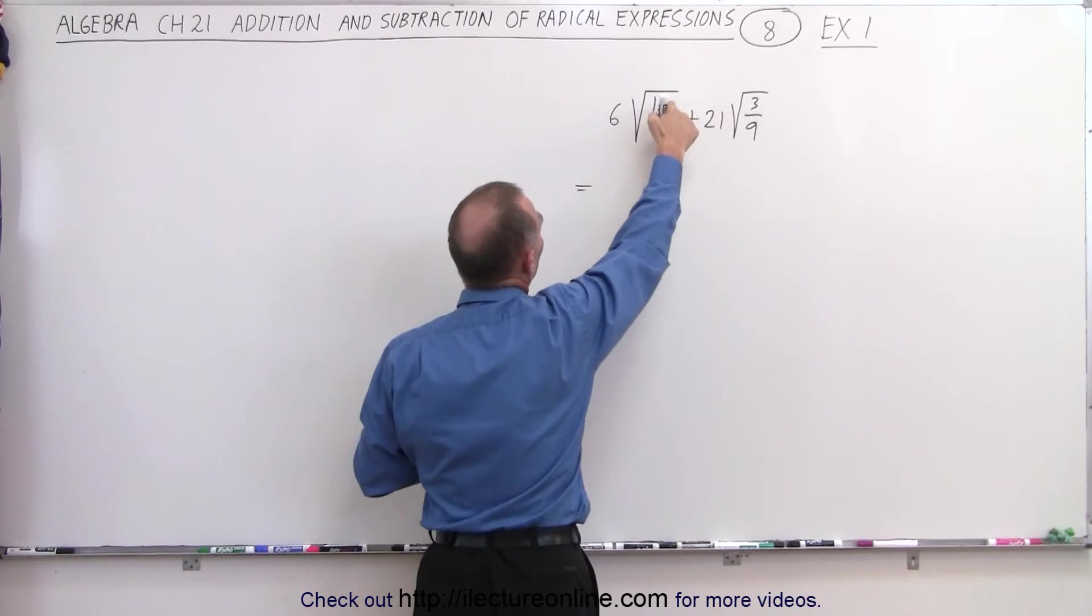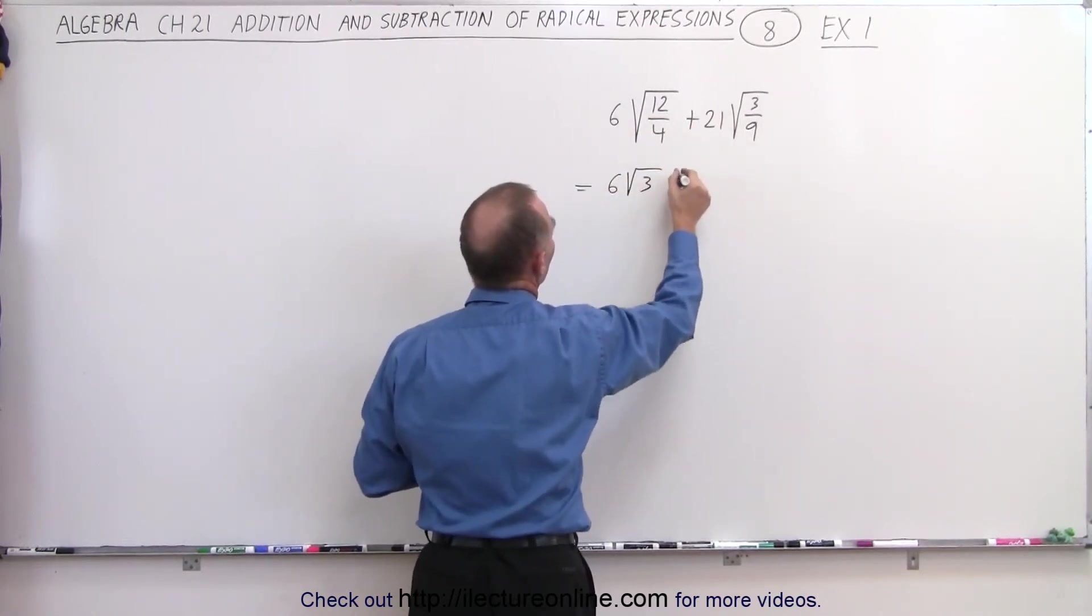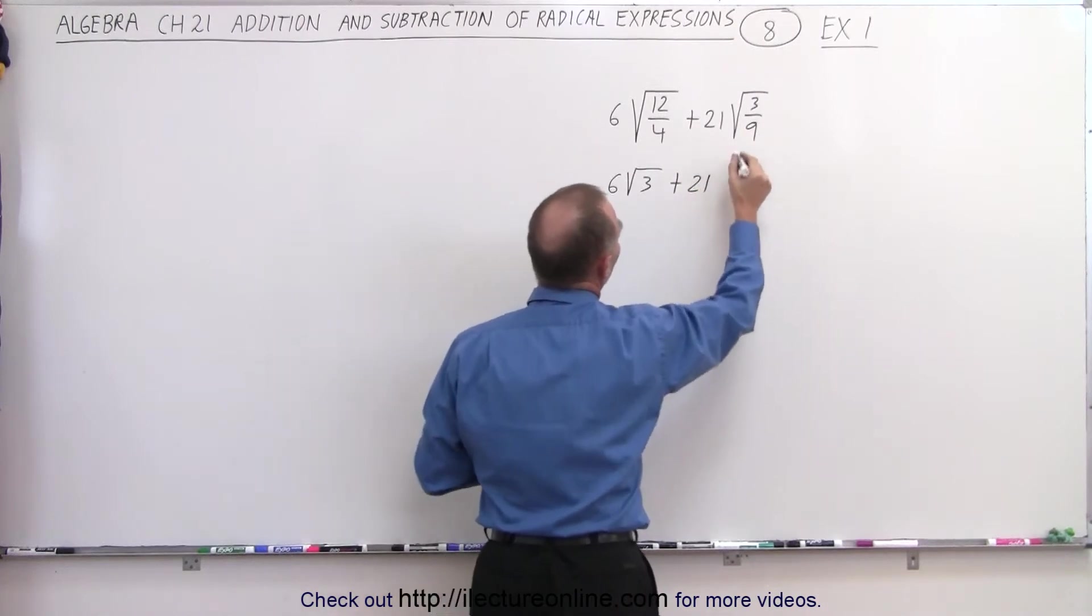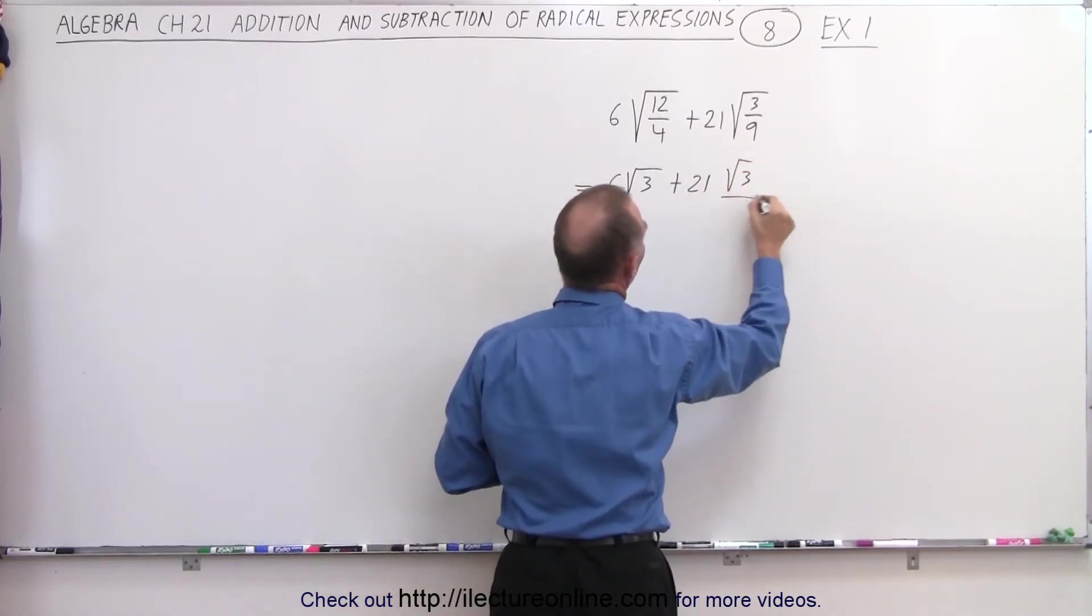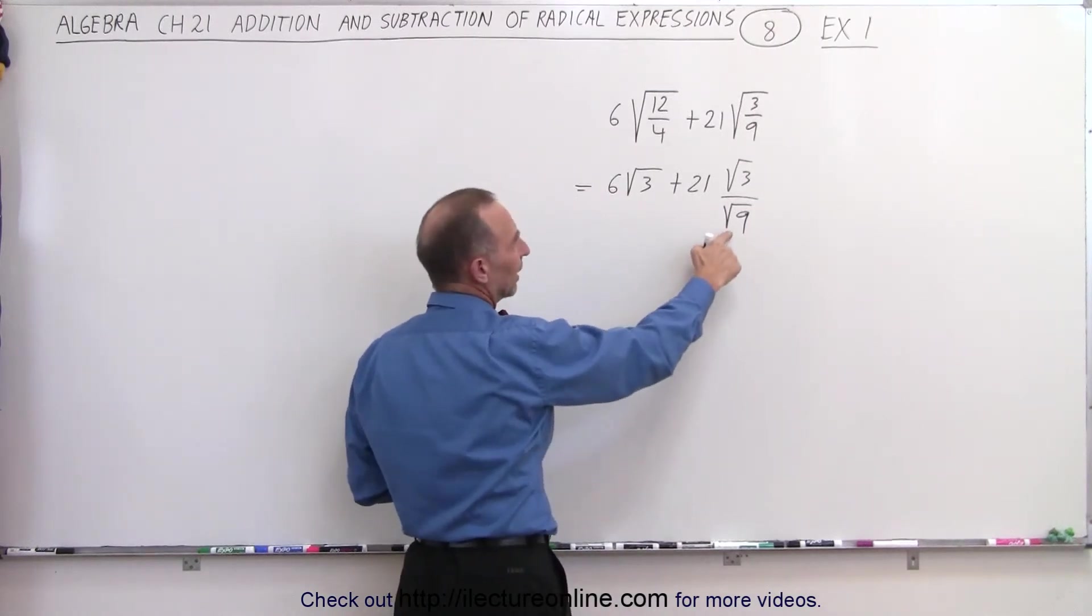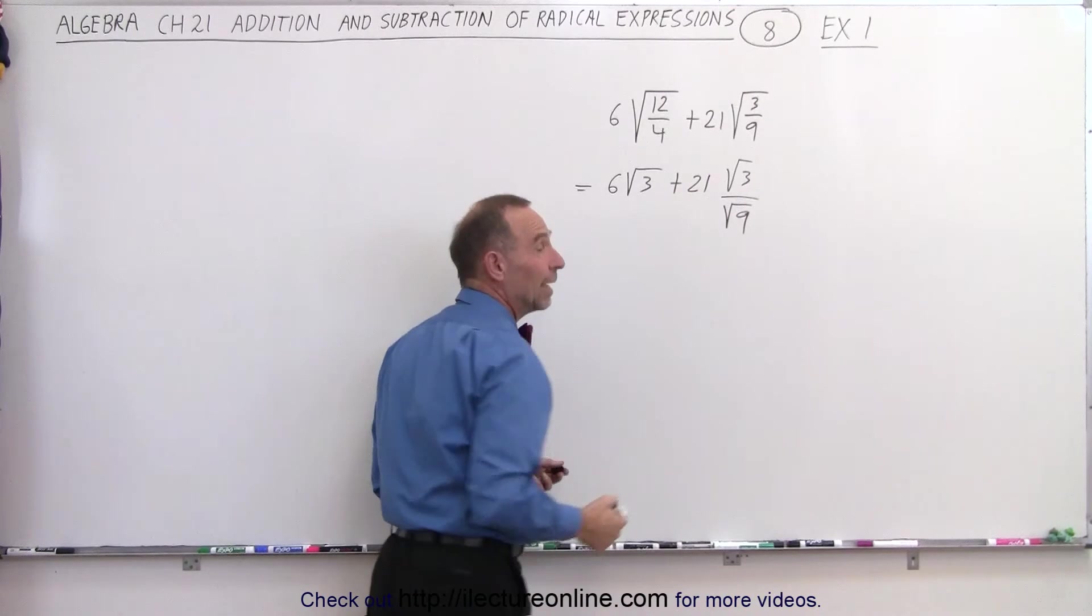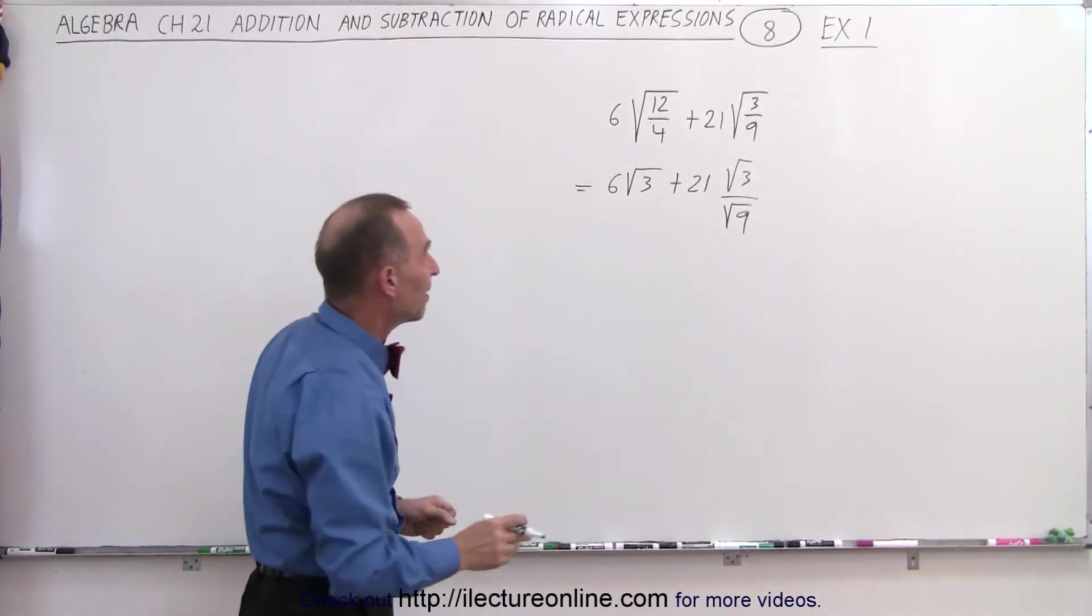So the first thing I'm going to do is divide 12 by 4 and get 6 times the square root of 3, plus 21 times the square root of 3 divided by the square root of 9. I'm going to separate them. And then notice, if I take the square root of 9 and get 3, then I end up with the square root of 3 in both terms, and I can see that the radicals are the same.